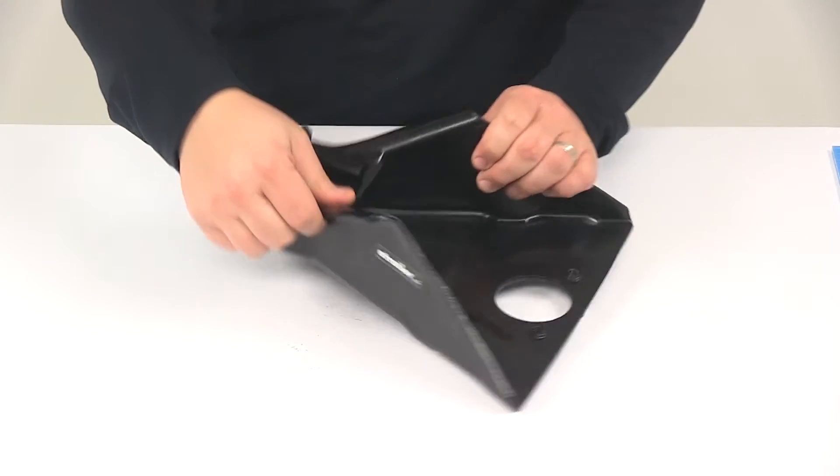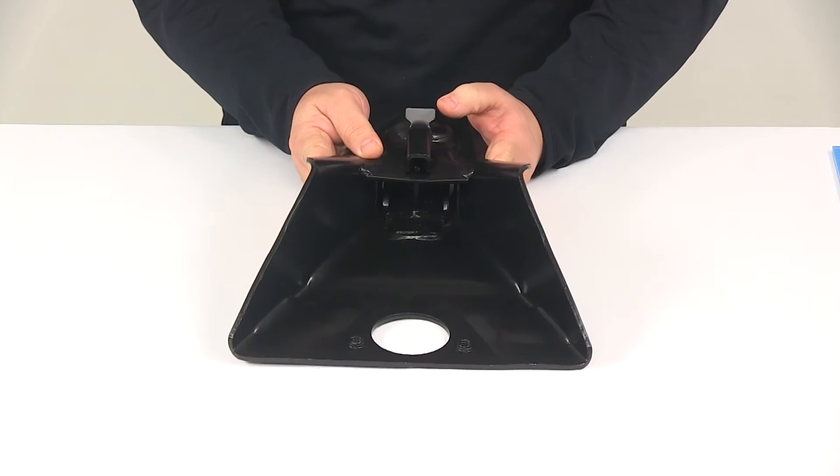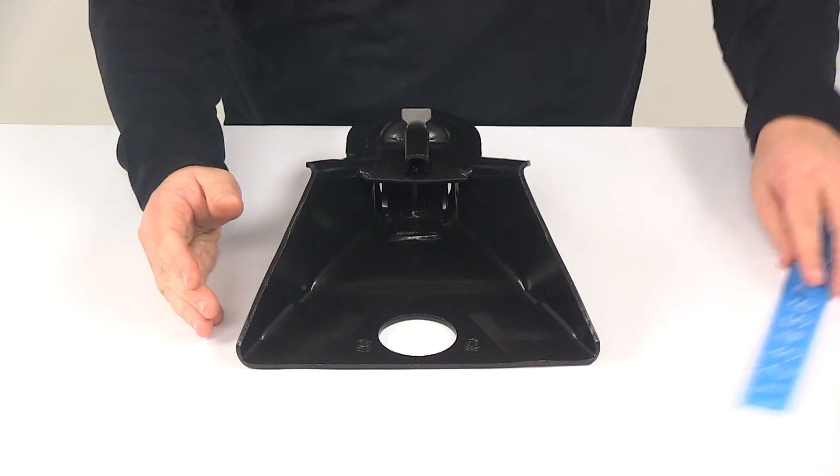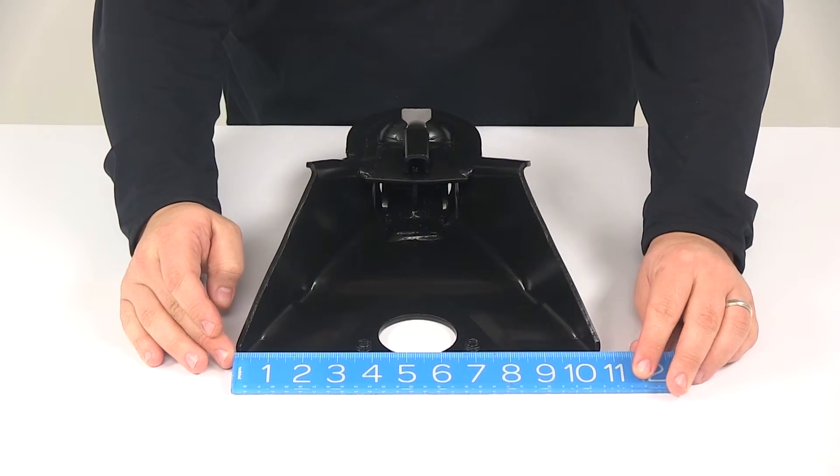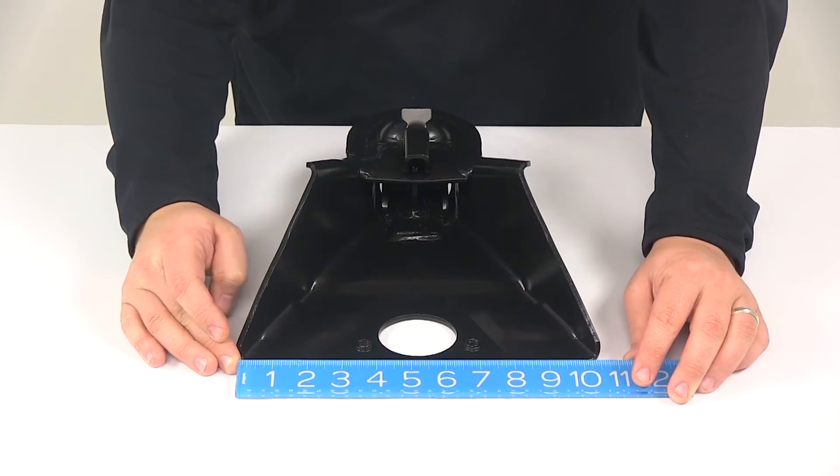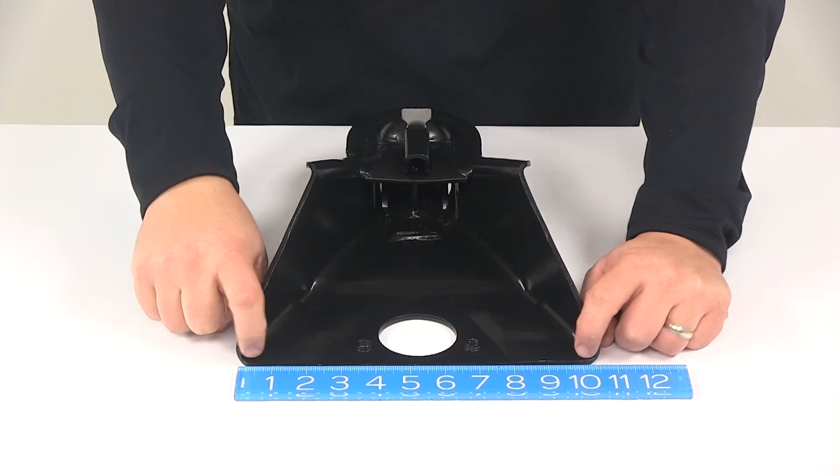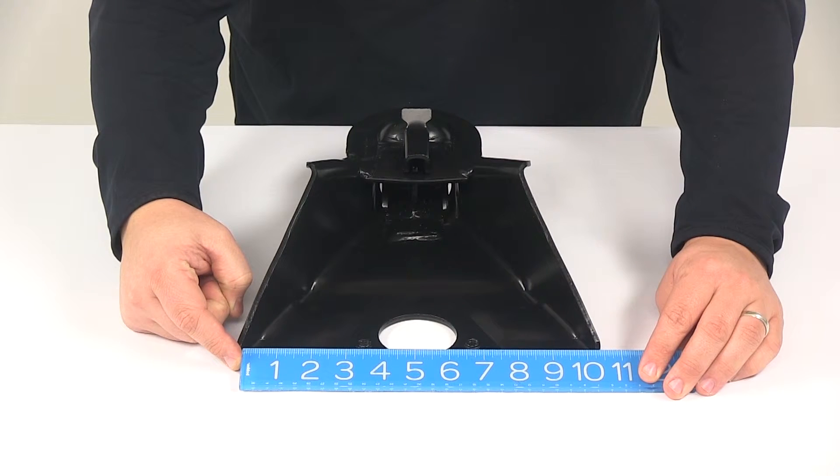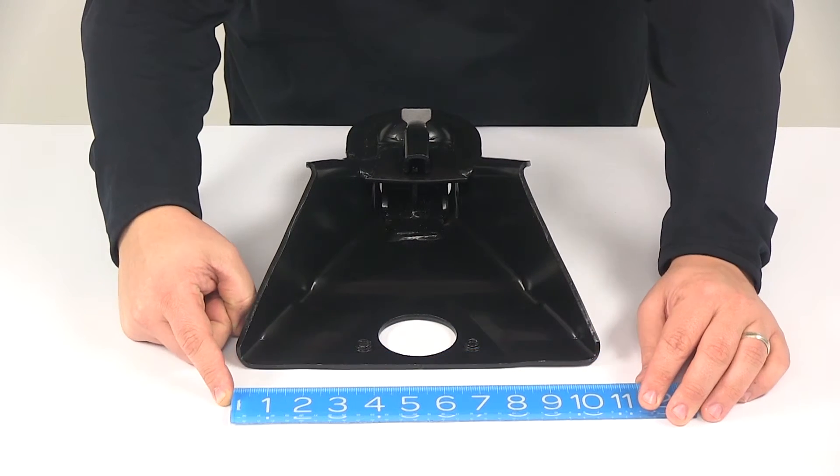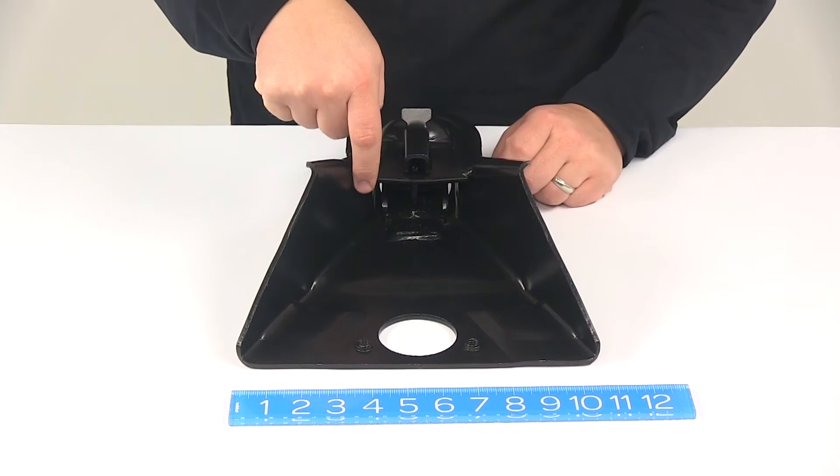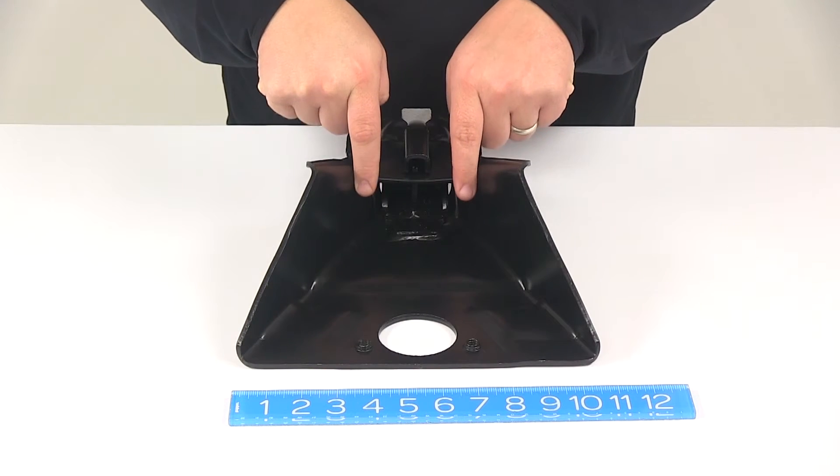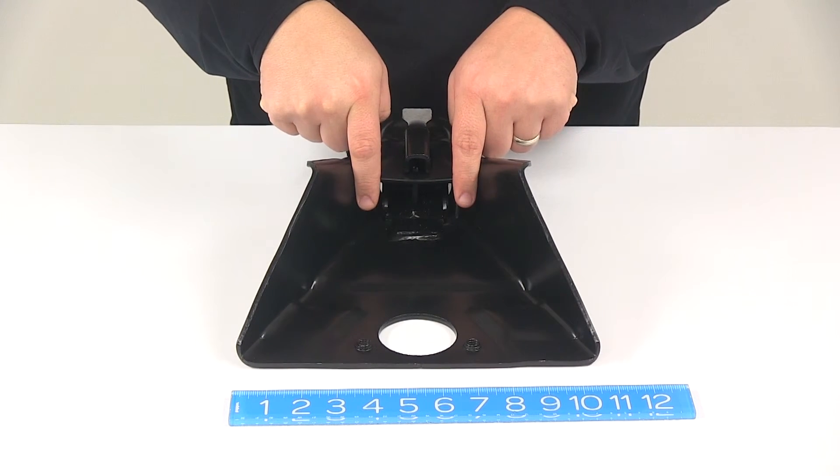Taking a look at the overall width, measuring from outer edge to outer edge, that gives a measurement of about ten and five eighths of an inch. Internal, so inside edge to inside edge, that measurement is closer to ten and one eighth of an inch. And then here at this point, inside edge to inside edge, that measures three and three quarters of an inch.